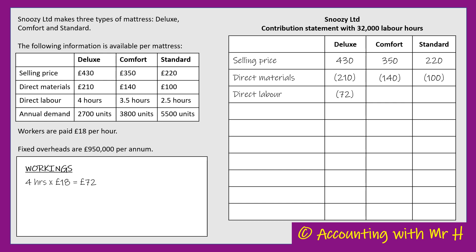Do the same with the Comfort - three and a half hours to make a Comfort, so three and a half times £18 is £63. Then the Standard takes two and a half hours, so two and a half hours at £18 an hour is going to cost £45.